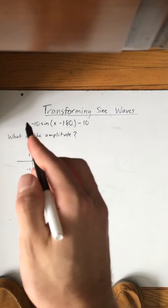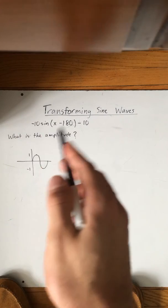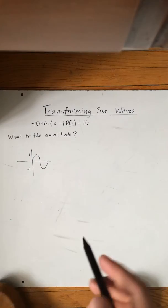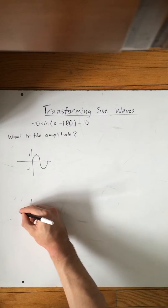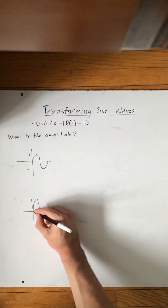Now if I'm translating this function using these translations, that negative 10 'a' value means that this will be the same except it will be stretched vertically like this.